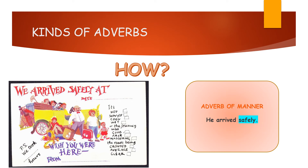Now we have adverb of manner. Adverb of manner always tells us about how the job was done. He arrived safely. She swam swiftly — how did she swim? Swiftly. He was sitting bored. He did this job efficiently. She sang beautifully, soulfully. These are all adverbs of manner, because they talk about how the job is done — they answer the question 'how'.